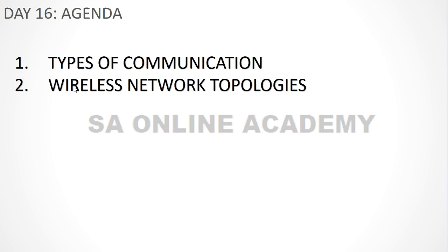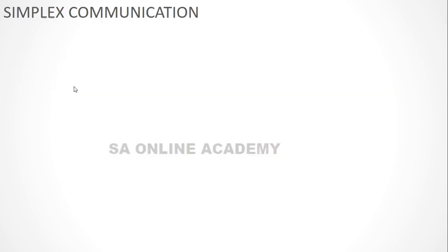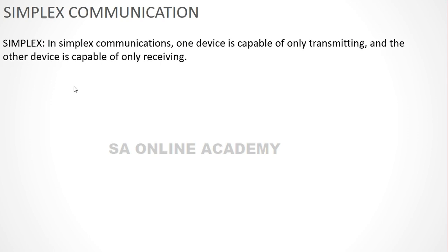The first part — types of communication — you may already be aware of, but I've included it so we have a clear understanding of simplex, half duplex, and full duplex communication. Later on we will discuss wireless network topologies. So, there are three major types of communication: simplex, half duplex, and full duplex.